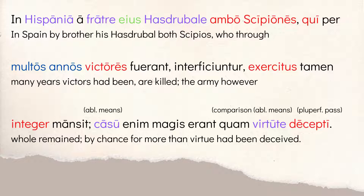There's a relative clause: both Scipios who, for many years — permultos annos, accusative duration of time — fuerant victores, they had been victors. But now here's the verb: interficiuntur — they were killed. They were killed by his brother, Hannibal's brother Hasdrubal. One of those Scipios is the father of the famous Scipio Africanus. They both die in Spain — another dramatic twist showing an obstacle the Romans must overcome.